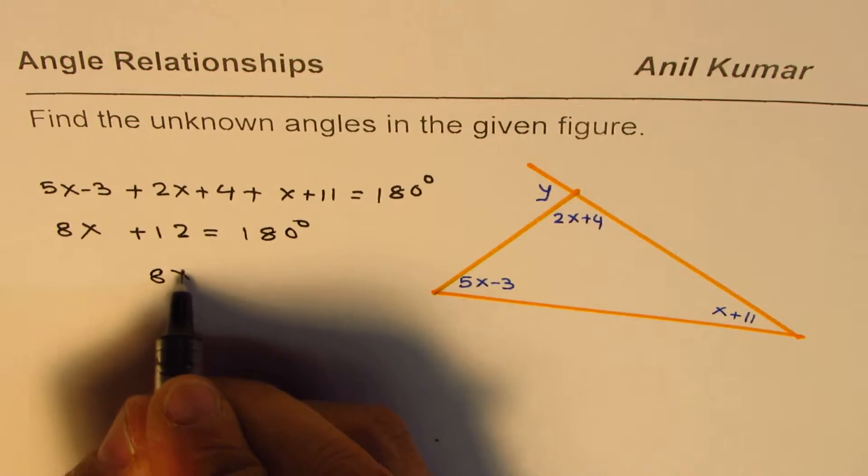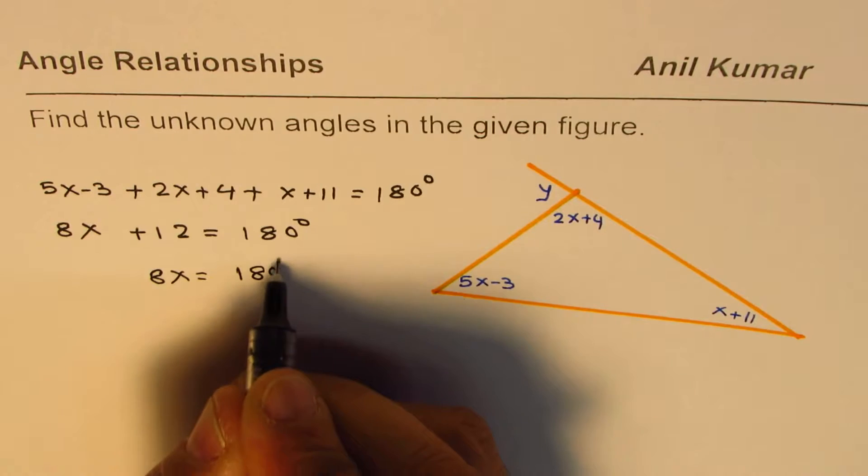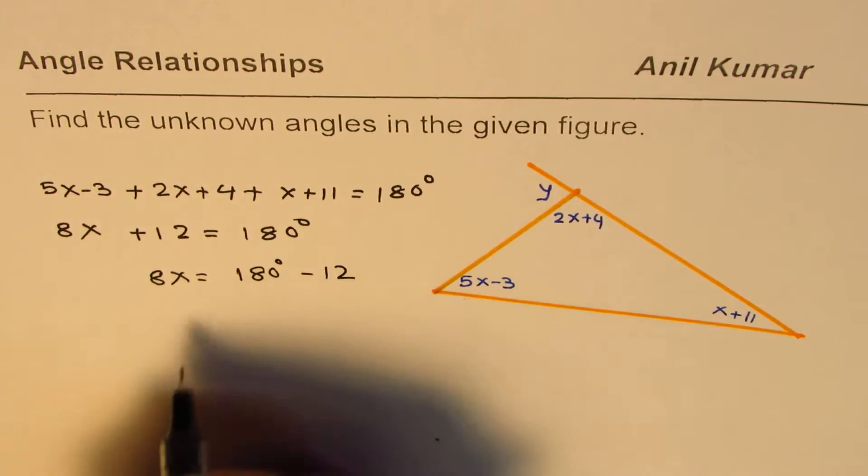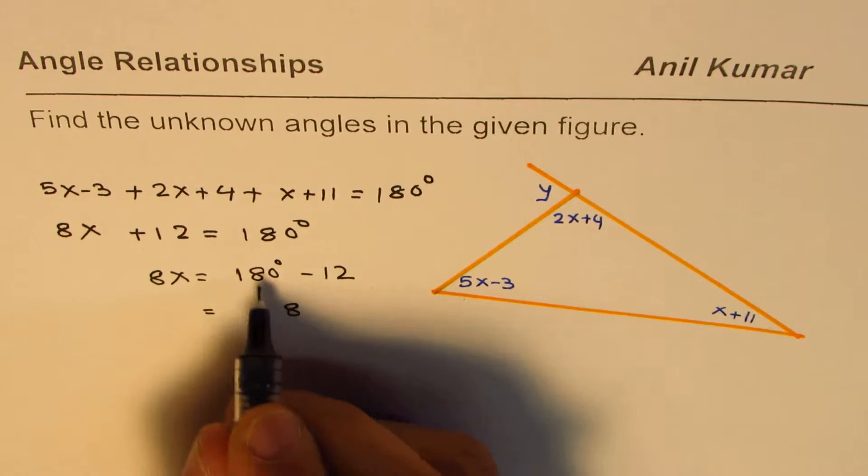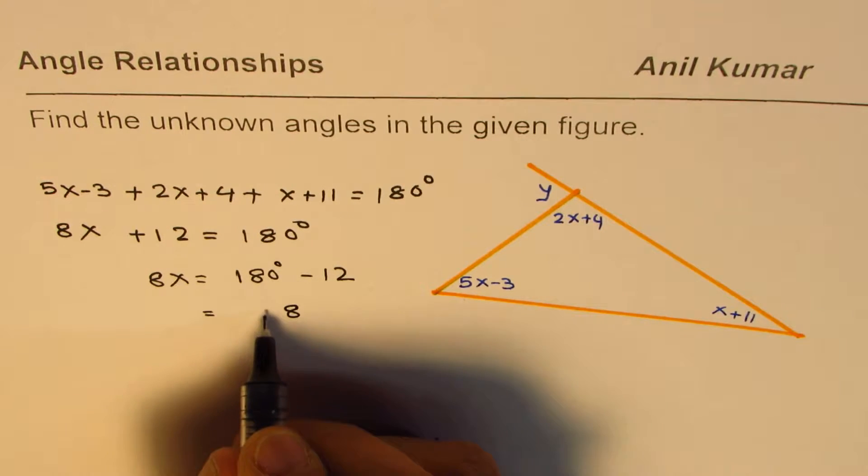So we can say 8x equals to 180 degrees minus 12. And that is, when you take away 12 from here, 8, 7 take away 1 is 6